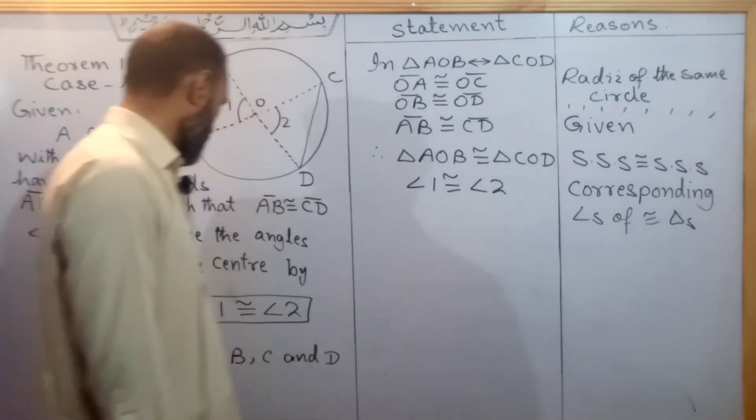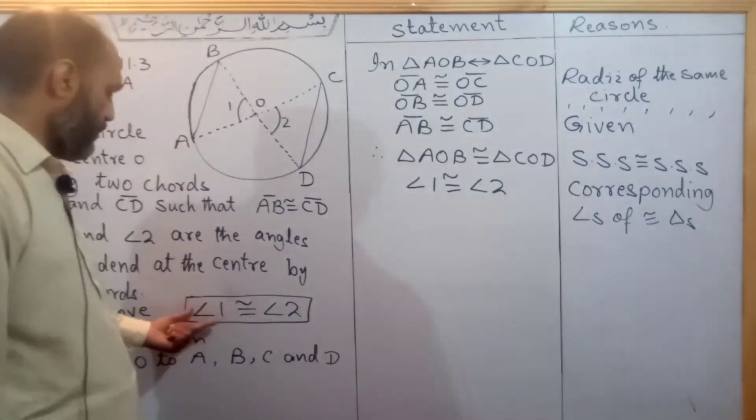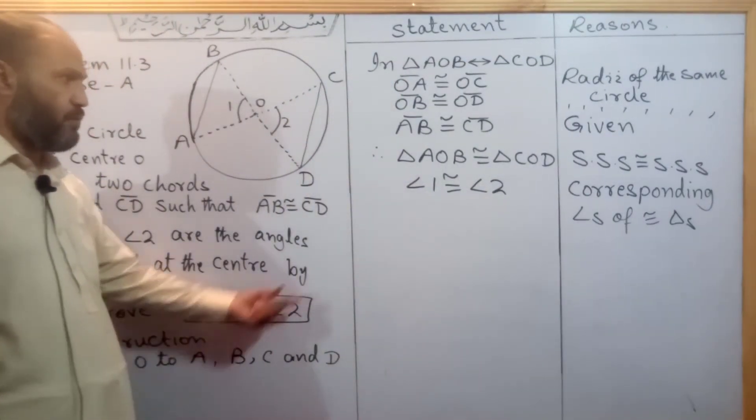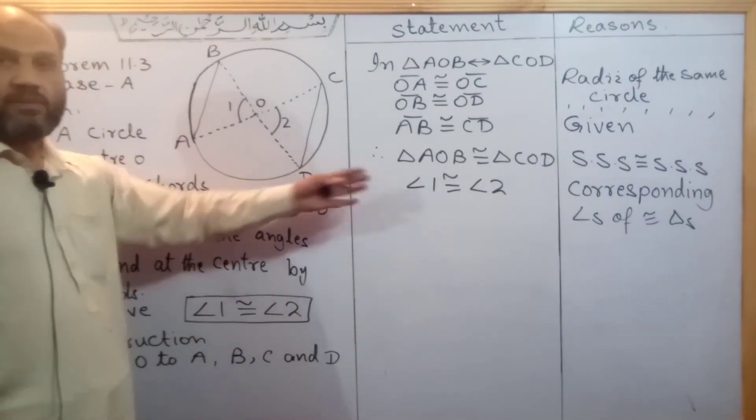Now, if you have Angle 1 congruent to Angle 2, it is congruent. These are corresponding angles of congruent triangles.